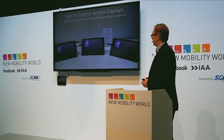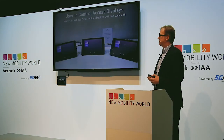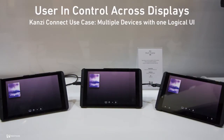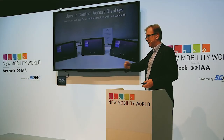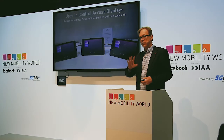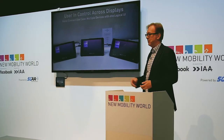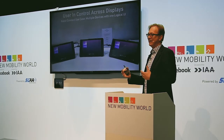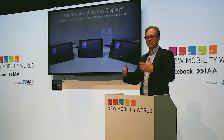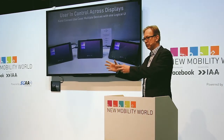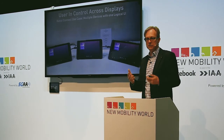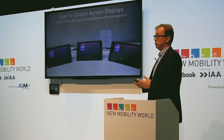This is a demonstration we have at our booth, about a hundred meters from here, which shows Kanzi Connect in action among several other demos. Here we're showing three different devices — these happen to be tablets, but we could be on different automotive hardware with different automotive operating systems — basically taking one object and flinging it across from one display, and not just displays, but from one compute platform to another. You can see this happening in real time in a natural way, giving drivers the flexibility to move data visualizations from one screen to another.